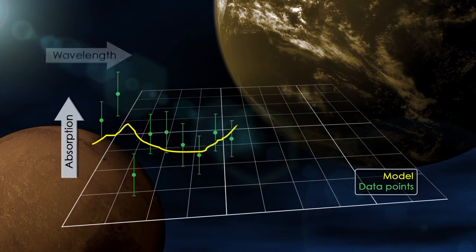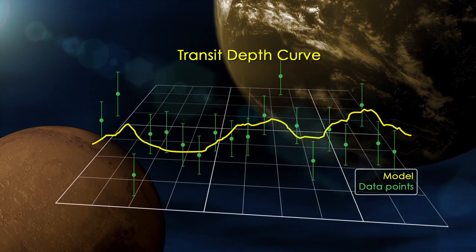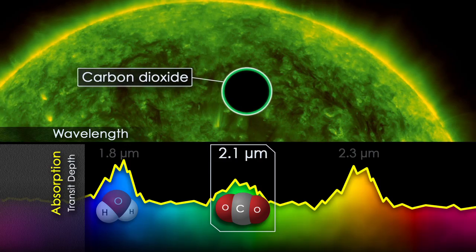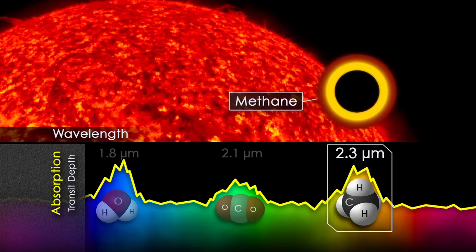Measuring the depth of absorption at each wavelength gives astronomers the planet's transit depth curve, which allows them to model the composition, height, and density of the atmosphere, providing a detailed picture of the planet.